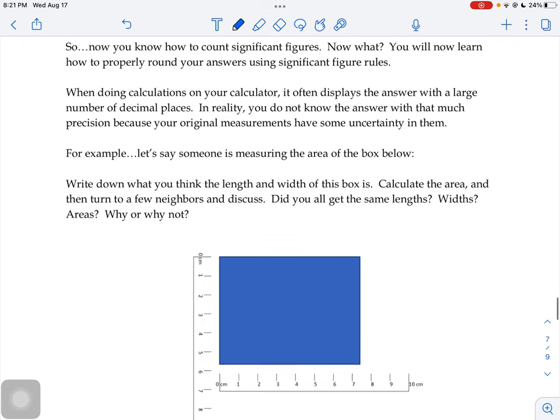So when you do calculations on your calculator, it often displays the answer with a large number of decimal places. But in reality, you don't know the answer with that much precision because all of your original measurements have some uncertainty in them.